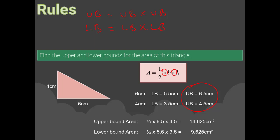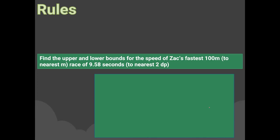Whenever you get a question like this, always write down the rule you are using first, then write down the upper bound and lower bound lengths for each measurement, and then put them into your formula to work out the answer. There's another question — pause the video, write down the formula and the rule you'll use, then have a go.